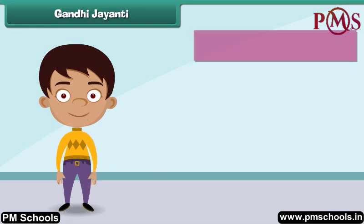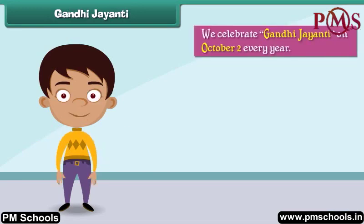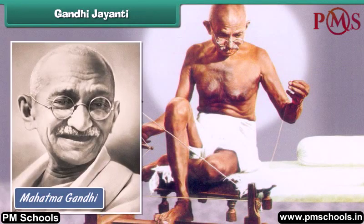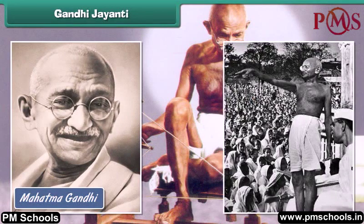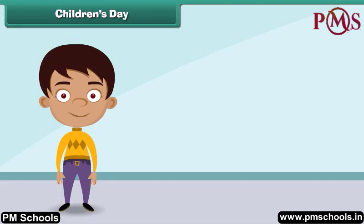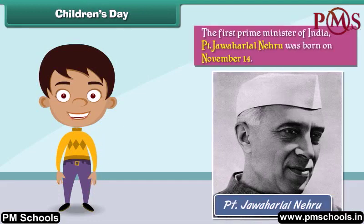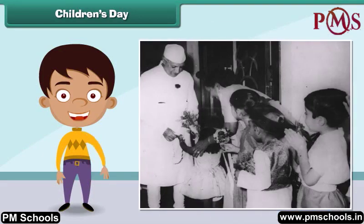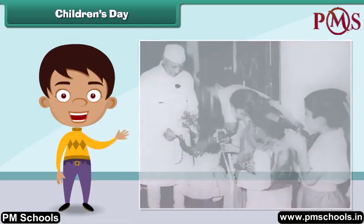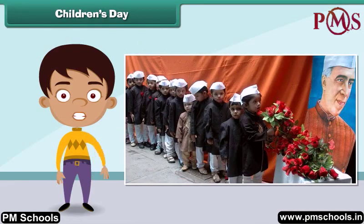We celebrate Gandhi Jayanti on October 2 every year. The day marks the birth anniversary of Mahatma Gandhi, the father of our nation, who played an important role in getting India independence from the British. Children's Day is celebrated on November 14, the birthday of the first Prime Minister of India, Pandit Jawaharlal Nehru. He was very fond of children and children affectionately called him Chacha Nehru, hence his birth anniversary is celebrated as Children's Day every year to commemorate his love for children.